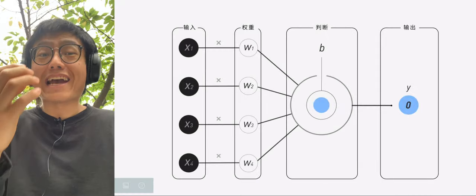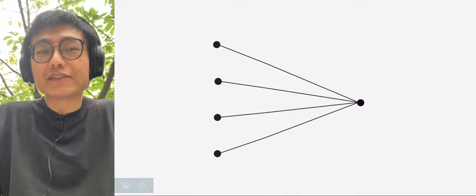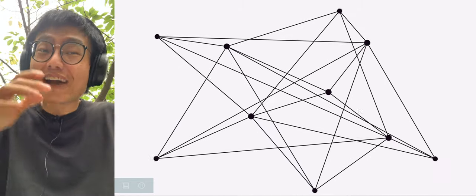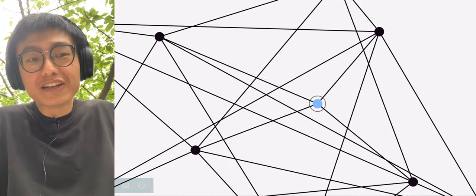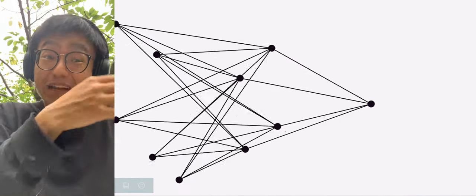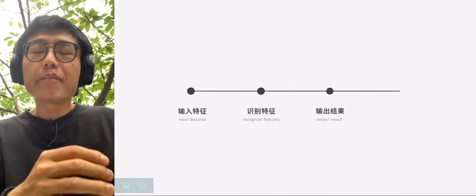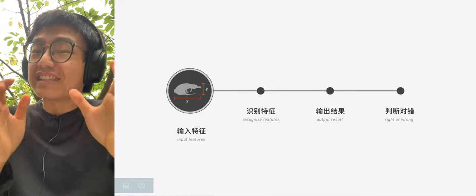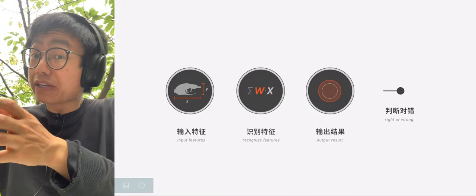Neural networks can recognize images and languages. They look complex, but in fact, they are all built by one small neural model after another, but we just let them start learning. The process is simple: input features, recognize features, output results, judge whether it is right or wrong.